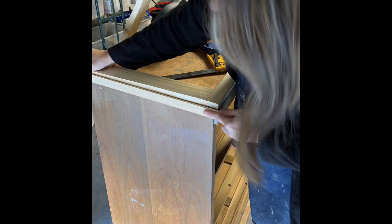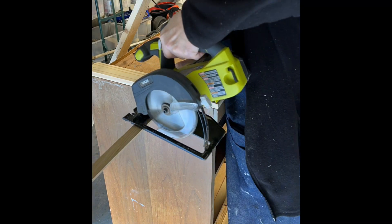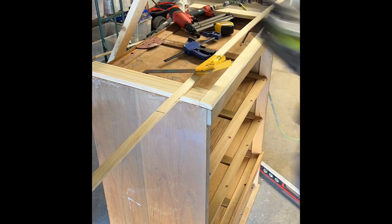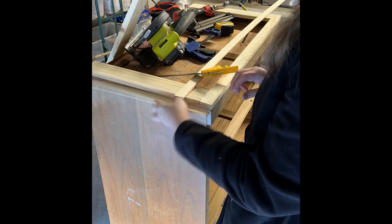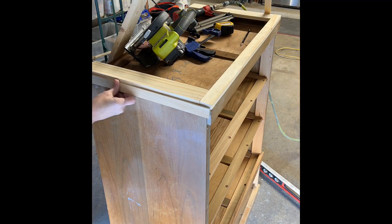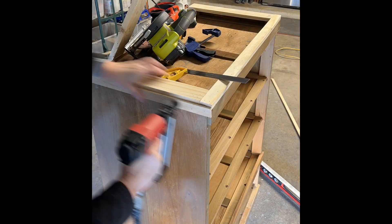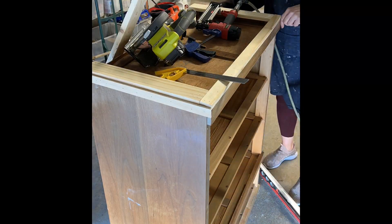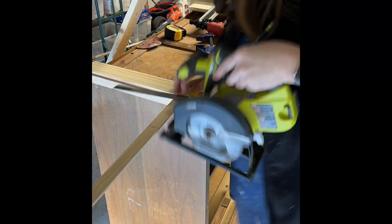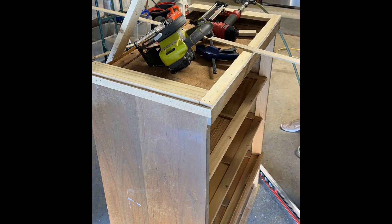So I'm just using my brad nailer and I'm using the lattice strips that I've cut, and I am just covering up the seam between the base, the new base, and where the old veneer is. I'm making sure everything's lined up and then just using that brad nailer to simply adhere the lattice.